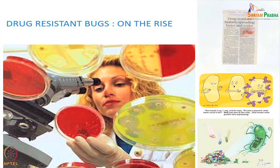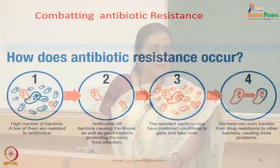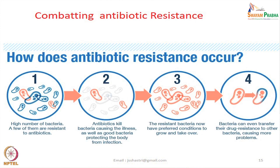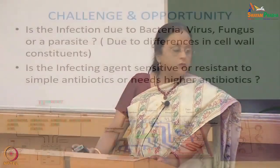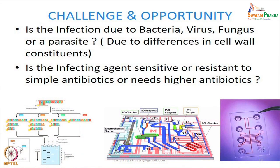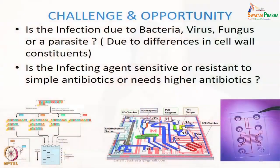Whether Artemisinin, which is given as a drug of choice for malaria, is one the parasite is resistant or sensitive to — these are questions which bog our minds when treating patients. Antibiotic resistance arises because elements responsible for drug resistance are transferred from one bacterium to another. Our challenge is determining whether the infection is due to bacteria, virus, fungus, or a parasite, using simple identification methods based on cell wall differences, and whether the infecting agent is sensitive or resistant to simple antibiotics.